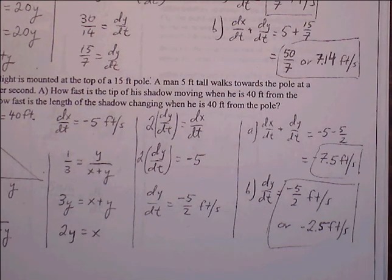dx/dt is negative 5. Solving for dy/dt, we divide both sides by 2, giving dy/dt = −5/2 feet per second. This is the rate at which the length of the shadow is changing, which answers Part B. For Part A — how fast is the tip of the shadow moving — we add the two rates together: dx/dt plus dy/dt gives negative 5 plus negative 5/2, which equals negative 7.5 feet per second.